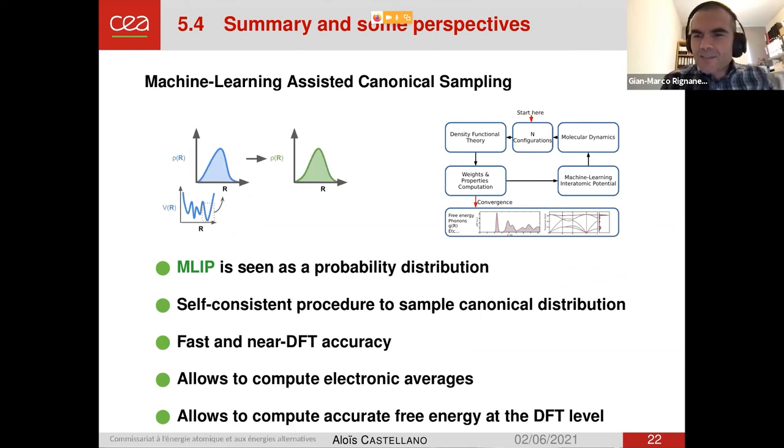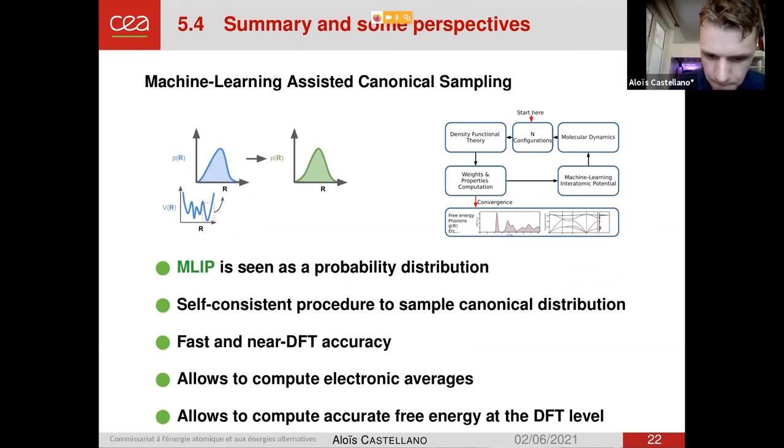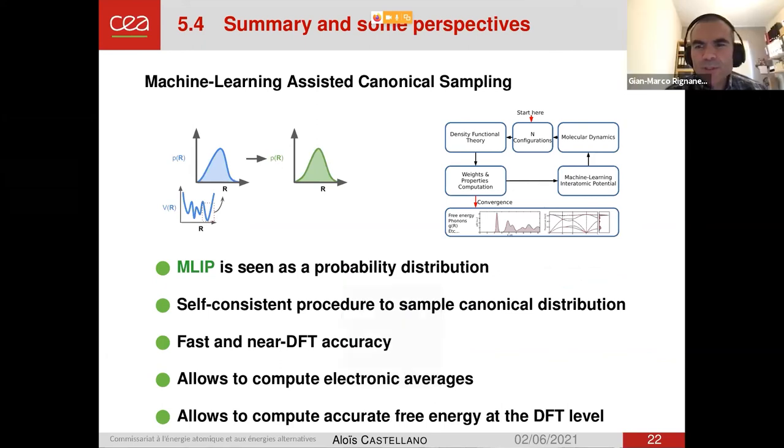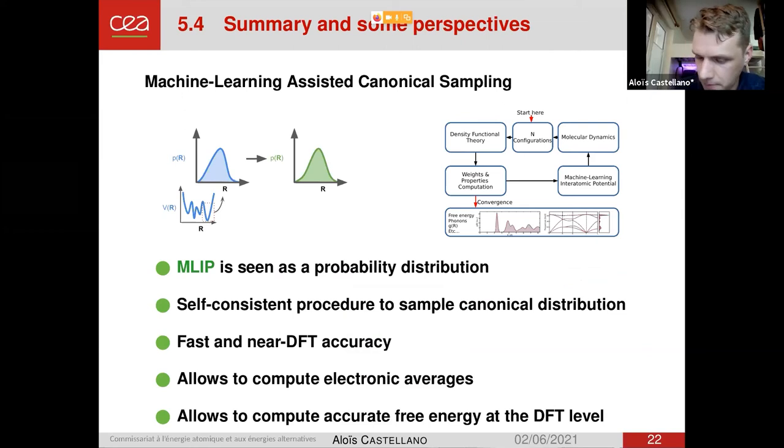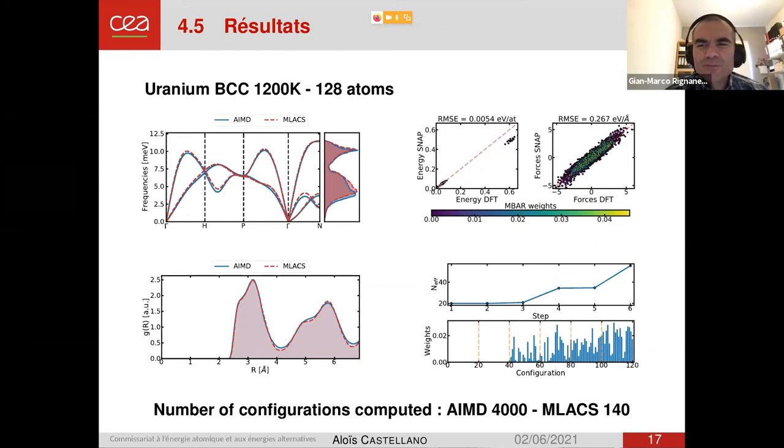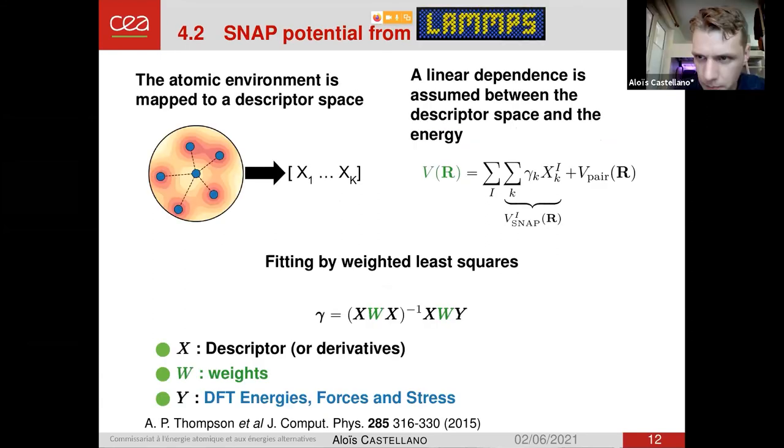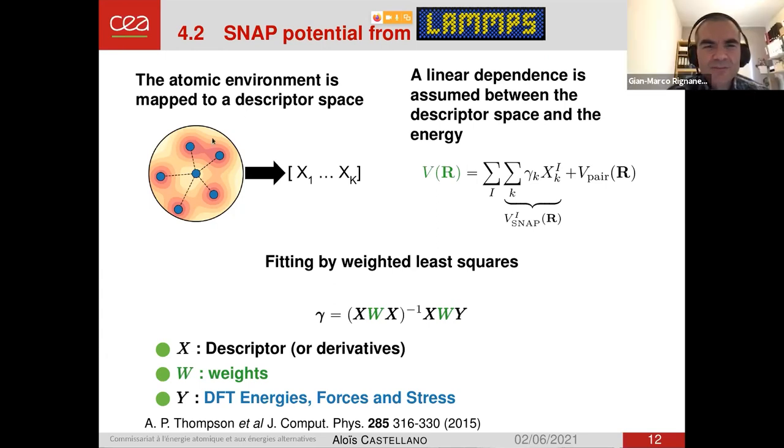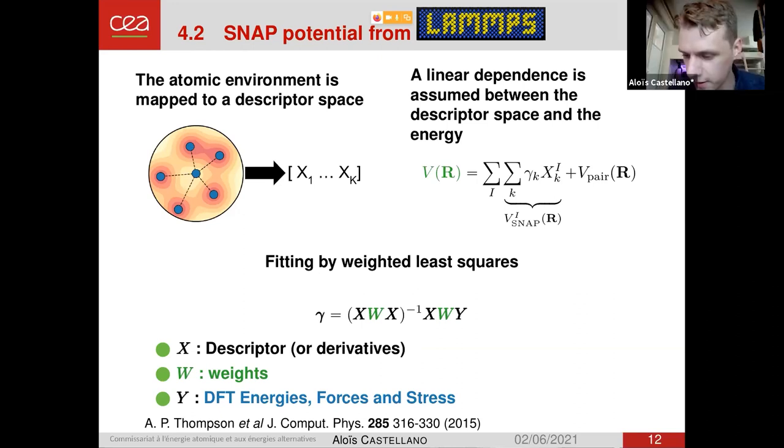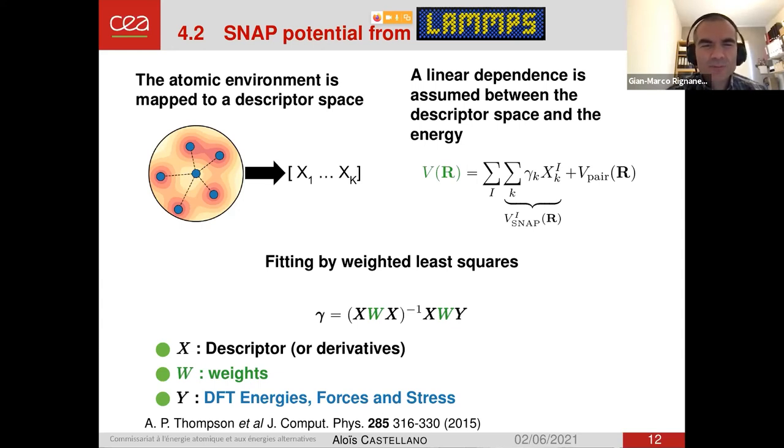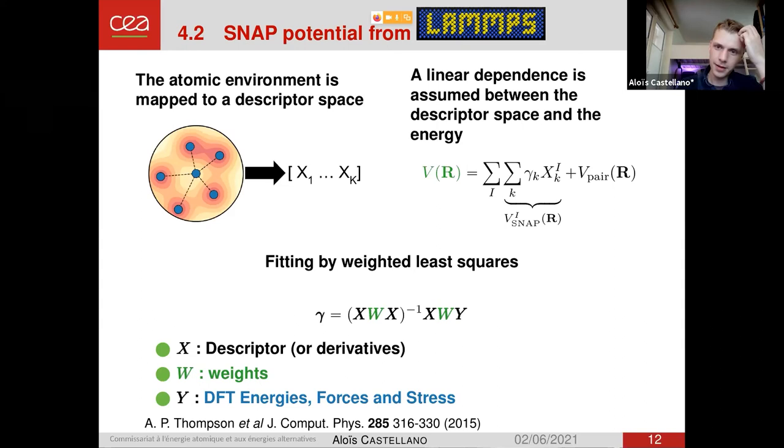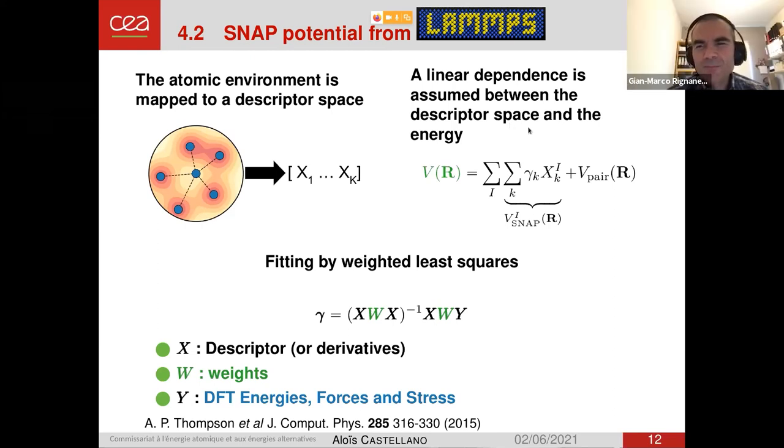Thank you, Alois. So there is one first question in the chat, by Pierre-Paul Legault, about your definition of the fitting of the weights. So the question is, what are the features, and from where comes the linear sampling? I'm sorry, I can't hear you very well. So the question is, what are the features of fitting the weight, and from where does the linear assumption come from? So, I'm not sure I understand completely what the question is. Maybe you can precise your question.